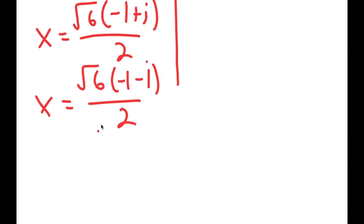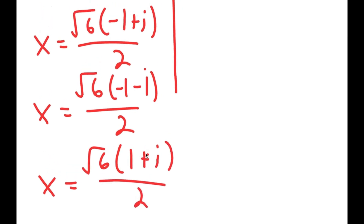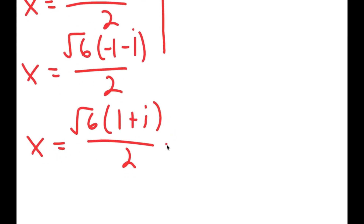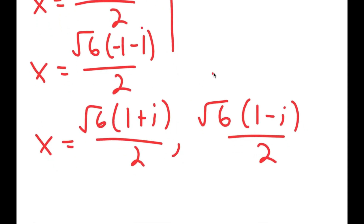Along with those, you should also get x equals square root of 6 times 1 plus i, all over 2, and x equals square root of 6 times 1 minus i, all over 2. So these are your four solutions.